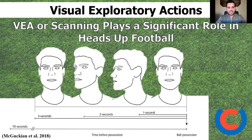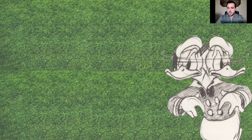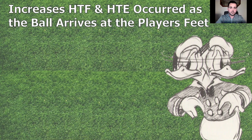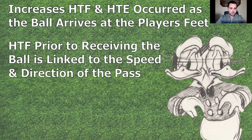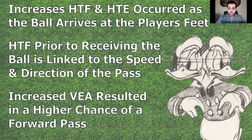This research has given us a very good understanding of the link between visual exploratory actions and performance. Key messages from McGuckian's research in an 11v11 game setting include: an increase in head turn frequencies and head turn excursions occurs as the ball starts to arrive at the player's feet — within a two-to-nine-second window. Head turn frequencies prior to receiving the ball are strongly linked not only to the speed of a pass but also to the direction of a pass. For players like Javi and Lampard, an increase in visual exploratory actions resulted in a higher chance of the ball moving forward.